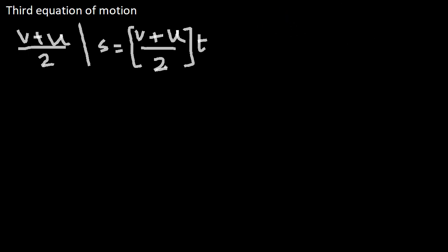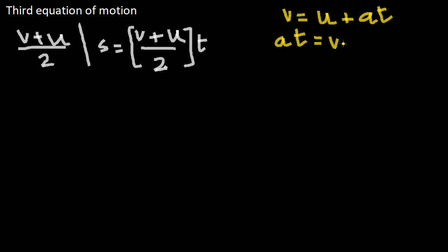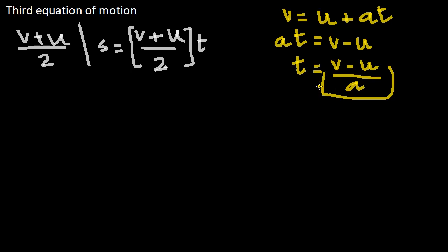What we are going to do is use the first equation of motion to find out what t is. The first equation of motion, as you might already remember, is v is equal to u plus at. From this, if we want to find out what t is, we take at and put u on the other side, so at is equal to v minus u, and then t is equal to v minus u divided by a. We are going to use this value of t from the first equation of motion and plug it in place of t in the displacement expression.